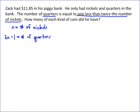Now we look for the value — the amount of the nickels that you have and the value of the quarters that you have has to add up to $11.85. To express value, we use the decimal equivalents: a nickel is five cents, so 0.05n. A quarter is 25 cents, and you multiply that times the number of quarters, which is 2n minus one. The value of those two has to equal $11.85.